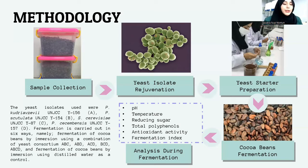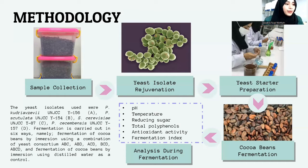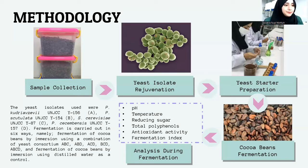The four yeast isolates are: PKS Kutulata UNGCC Y156, coded A; PKS Kutulata UNGCC Y144, coded B; Saccharomyces sp. PCI-A UNGCC Y87, coded C; and PKS Cessimensis UNGCC Y157, coded D.